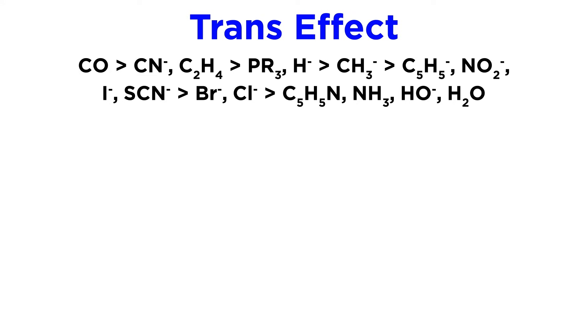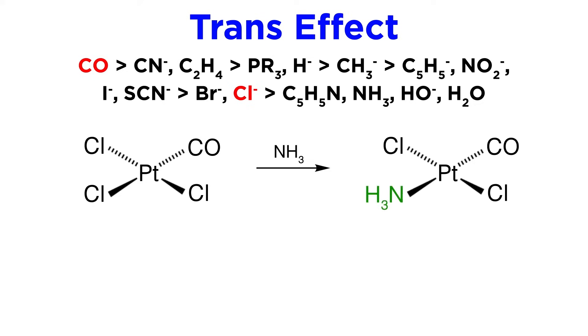With all of this understood, let's just look at a couple of examples and make sure we can predict reaction products. Here is a platinum complex with one carbonyl and three chloride ligands. Which ligand will ammonia replace? Well, the carbonyl is stronger than chloride in terms of the trans effect, so the ammonia will end up trans to the carbonyl.